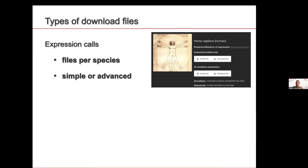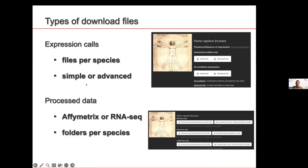We provide either an anatomy-only file with information at the organ level, or a file with all condition parameters — anatomy, developmental stage, sex, and strain — though those files are larger. These are for retrieving expression calls. You can also retrieve processed data for your own analysis, such as TPM values for each gene. For single-cell data, we process it taking into account the protocol, barcode position, and UMI. You can download these TPM values along with annotation for each library — these are what we call process data.